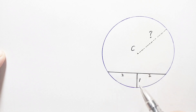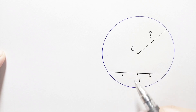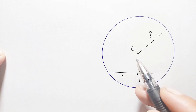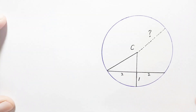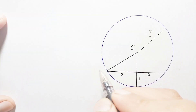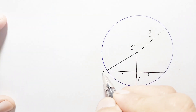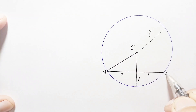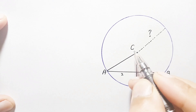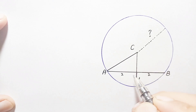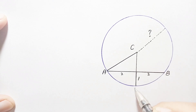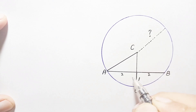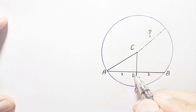We also expand this perpendicular bisector to connect it with the center. Let us label the points: this is point A, this is point B, this is point C, this is point D, and this is point E.